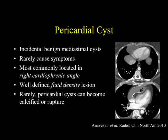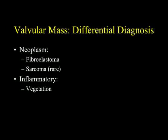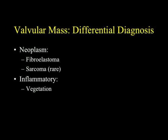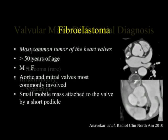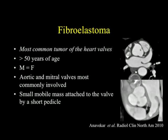Pericardial cysts are typically water density, usually at the right cardiophrenic angle, incidental findings that do not cause symptoms. They can be large, and occasionally they can calcify. We also rarely see vascular masses — we've picked these up incidentally in some of our cardiac CT patients when looking at the coronary arteries. Fibroelastoma is the one you typically think about; sarcomas are rare. Vegetations, particularly in patients with endocarditis, are also things to look at. Fibroelastoma is the most common tumor of the heart valves, typically in patients over age 50, involving the aortic and mitral valves most commonly — a small mobile mass attached to the valve by a short pedicle. Unless you gate the study, you're just never going to see these small lesions.